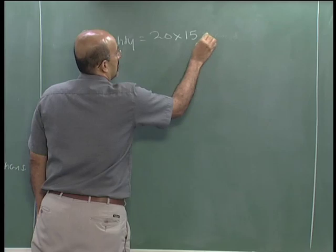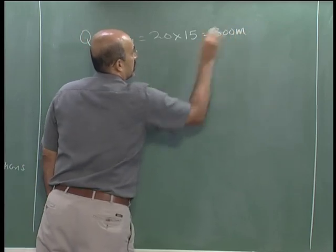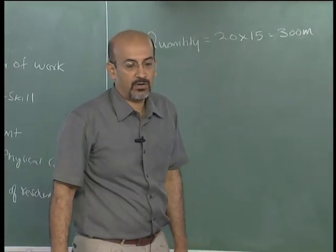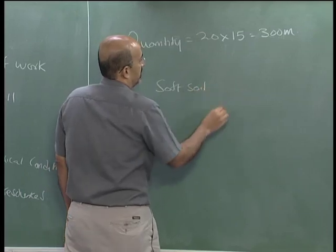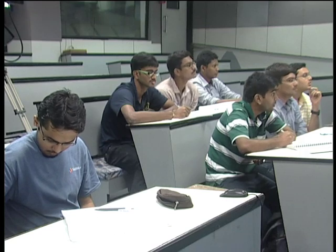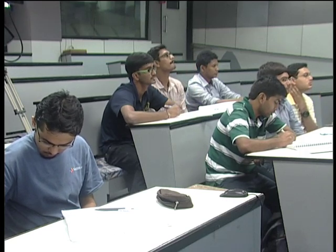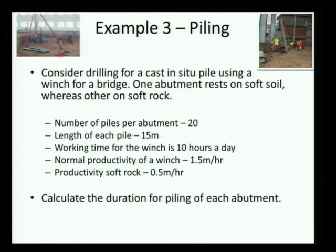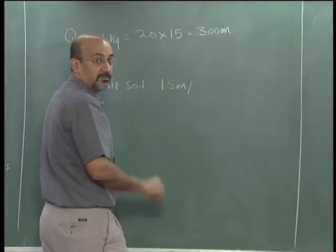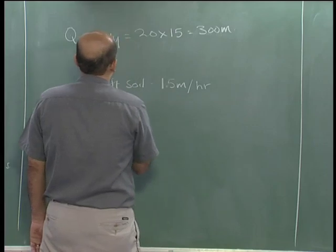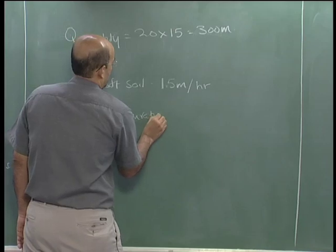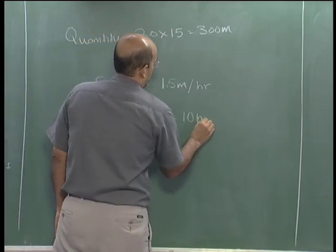So, 20 into 15 gives us 300 meters for one abutment. On the soft soil side, my productivity is 1.5 meters per hour. Normal productivity is 1.5 meters per hour. Working 10 hours a day, this comes out to about one day — so the duration is approximately 20 days for the soft soil abutment.